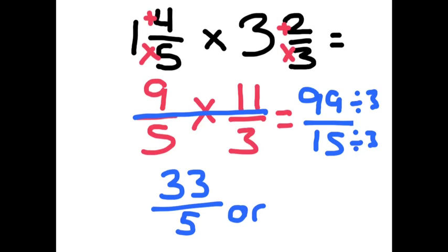Or I can write it as a mixed number. There are 6 whole 5's in 33 with 3 left over, and 5 is the denominator. So either one of these is the right answer.